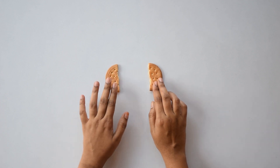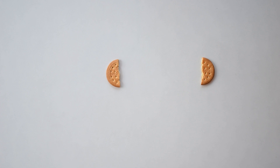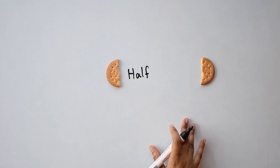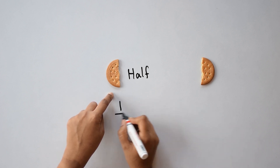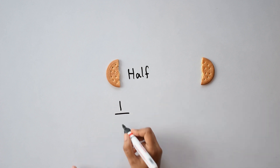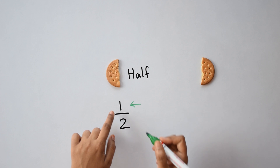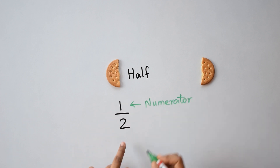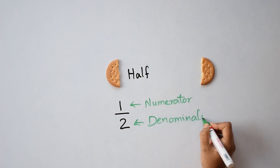Suppose I take one part and give the other part to my brother. So which is the part which I have? It is nothing but half of the biscuit. How can I write this using numbers? I can write it as 1, that is the number of parts which I have, and 2, these are the total number of parts. This is read as 1 by 2. Here 1 which is on top is called the numerator and the number which is below is called the denominator.